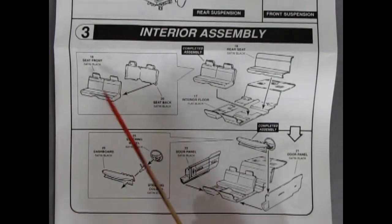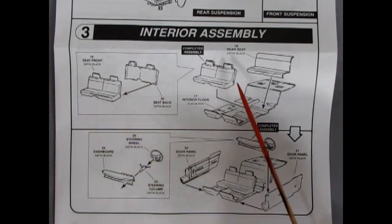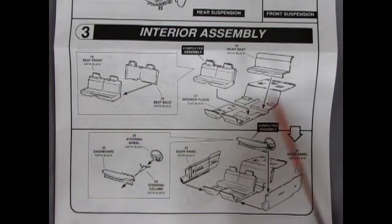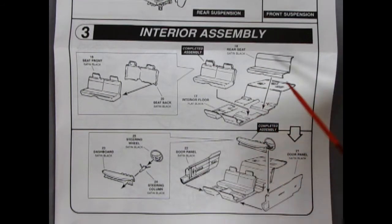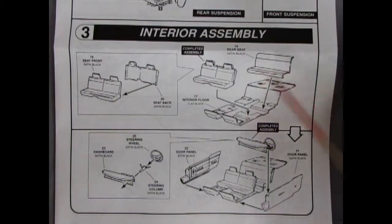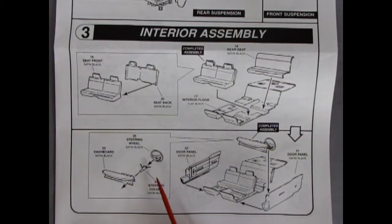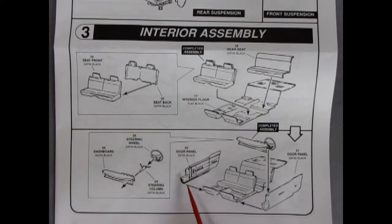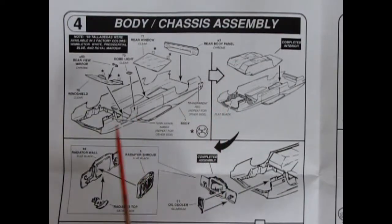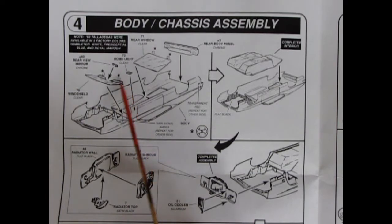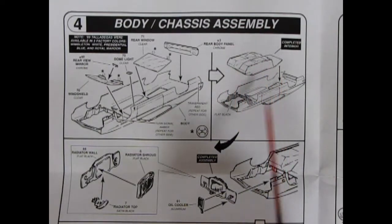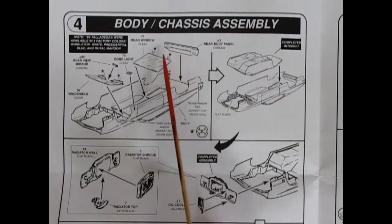Now for our interior assembly we've got a bench seat in here and we've got a front and back which glue together, and then that drops into our floor pan. And I'm excited because here we get separate molded details which is cool. There's our back seat dropping in, then we've got our dashboard and our steering wheel and our steering column all going together. And then hooray, separate molded door panels, I love it. They pop on the side and our dashboard gets squeezed in between on these little notches. So there's our entire interior.